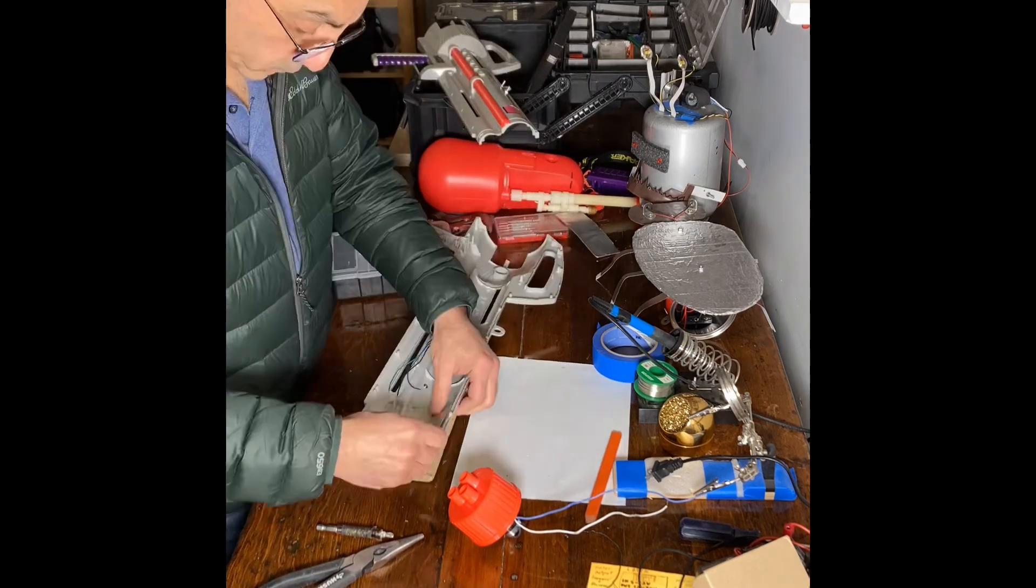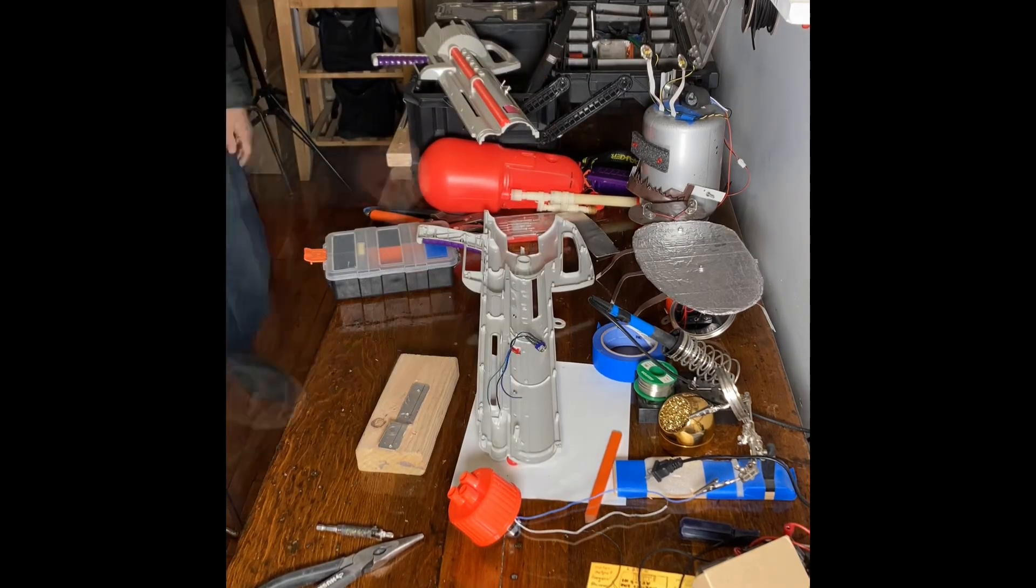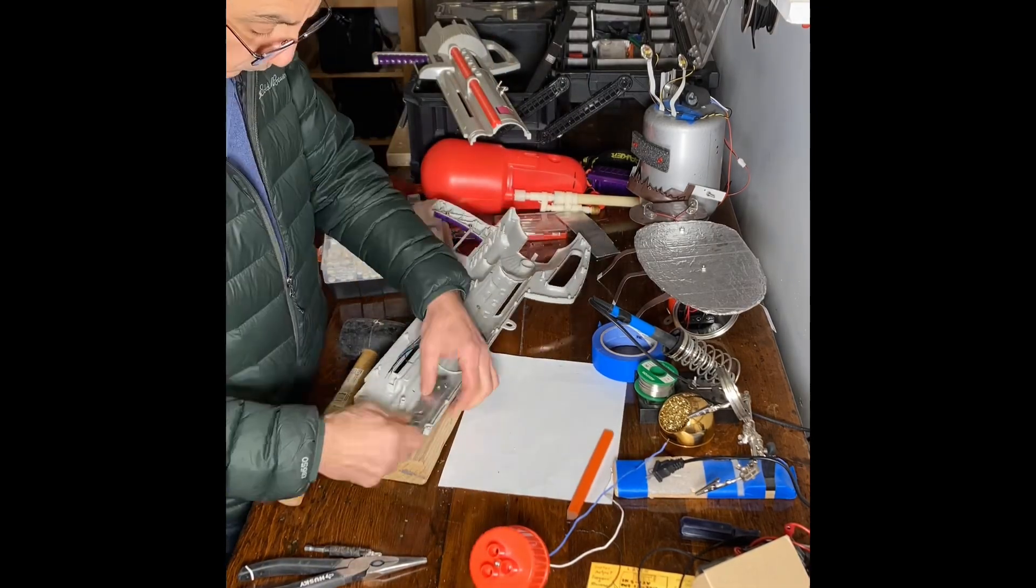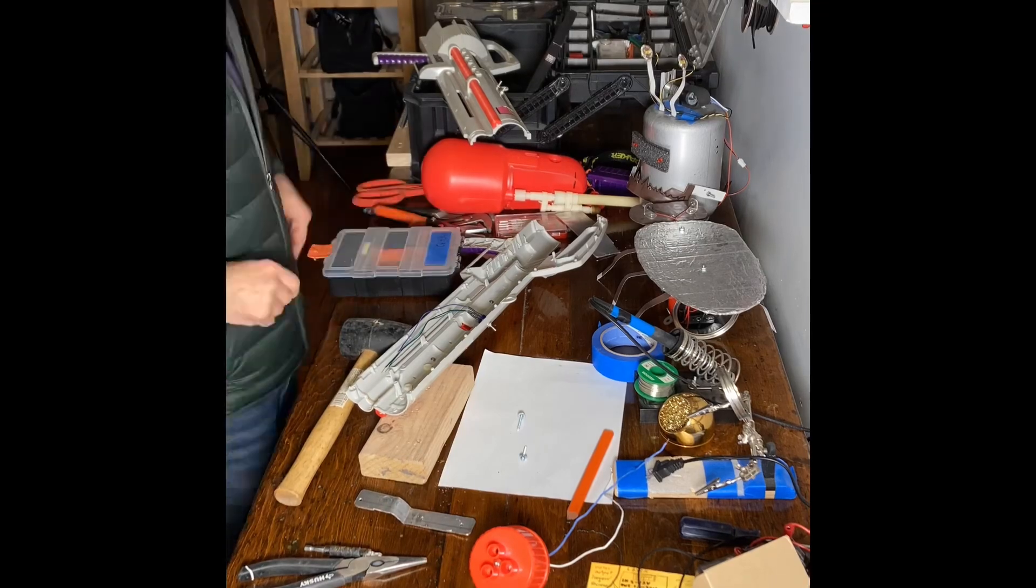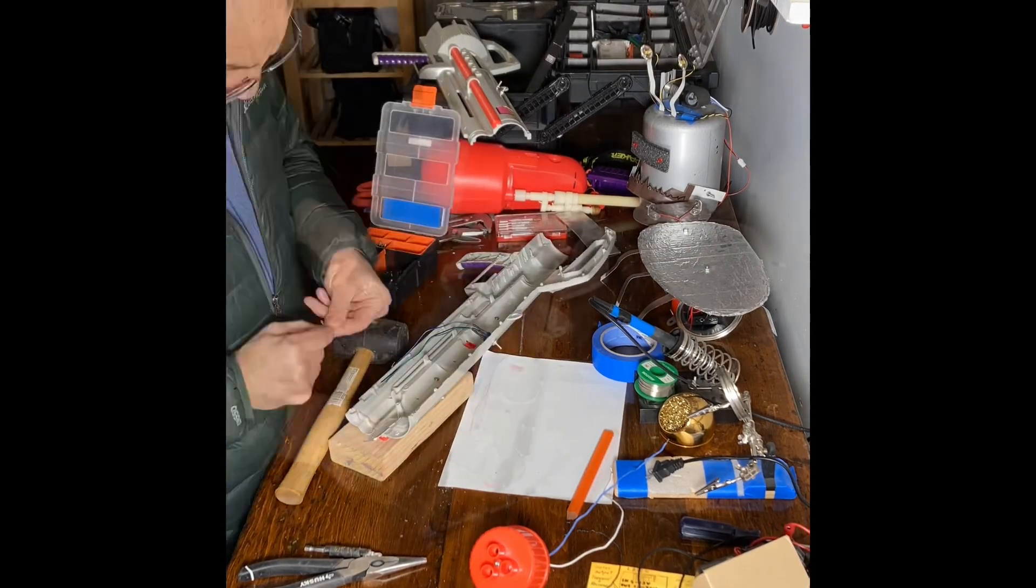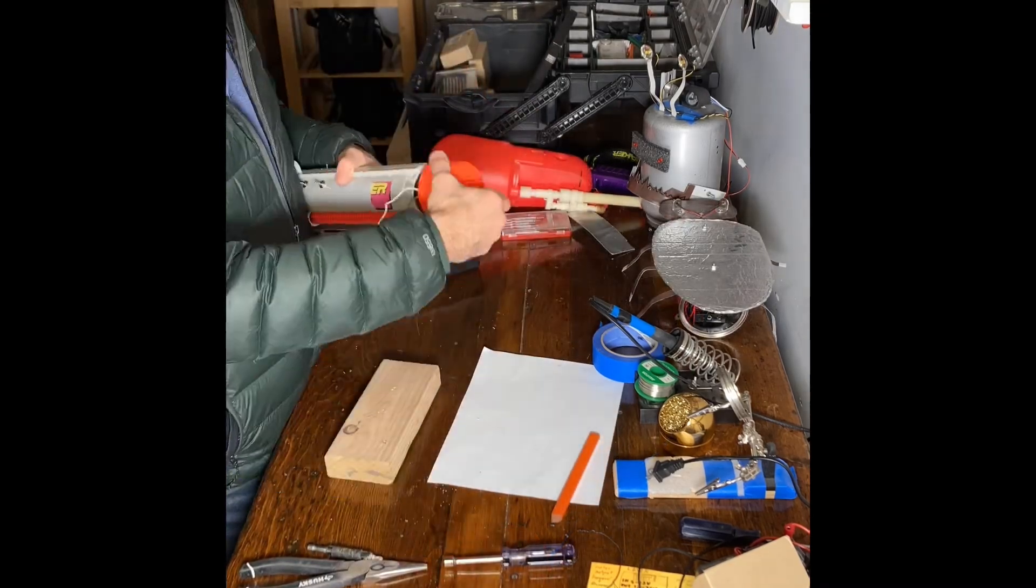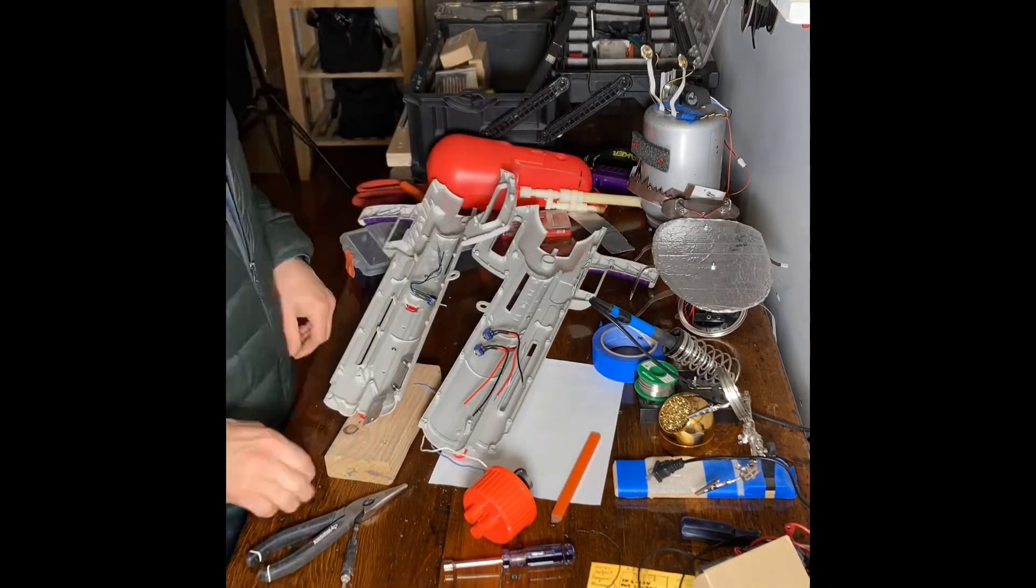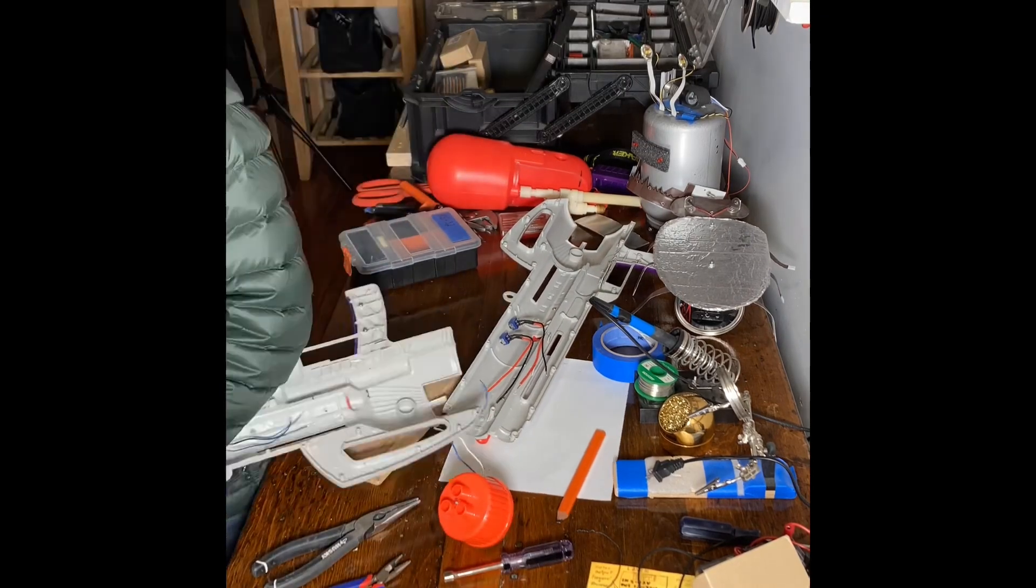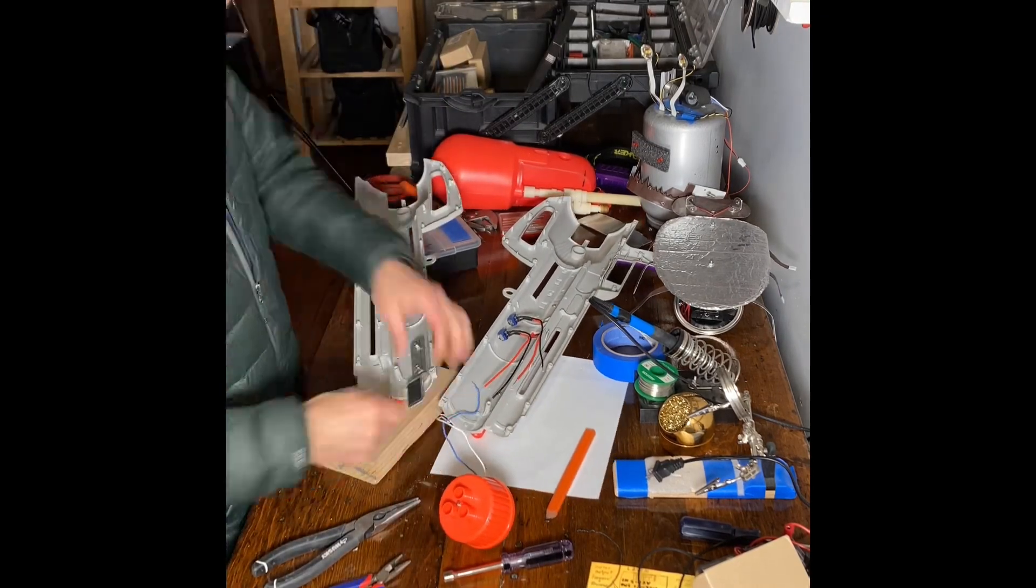So I'm fabricating the offset bracket for holding the motor that spins the front sort of three barrel Gatling gun and it's a trial and error process. Check the offset, dry fit it, see how it looks, see if the front spins without rubbing or any other conflict and then drill it and mount it.